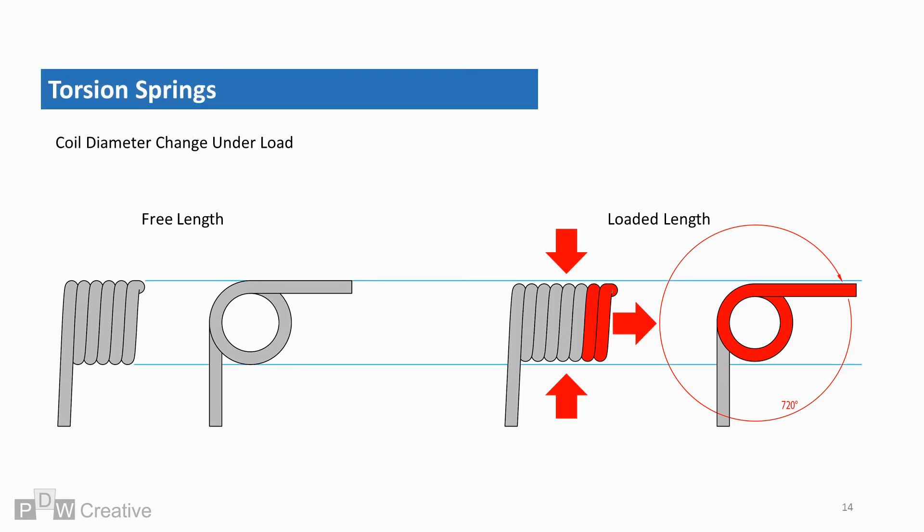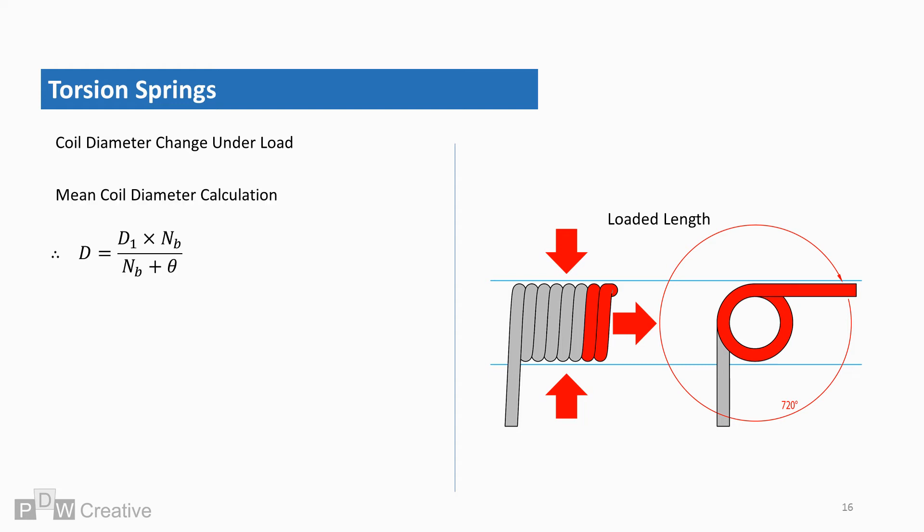It's not just the free length that changes under load. While the length increases, the coil diameter also decreases. Let's assume we know the original coil mean diameter before any load is applied. The mean diameter under load is D1 times NB over NB plus additional coil rotations.